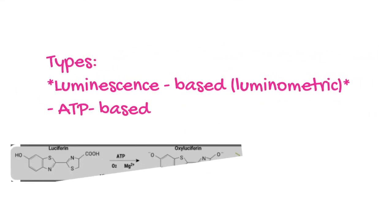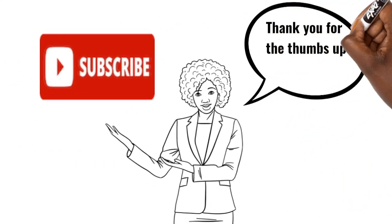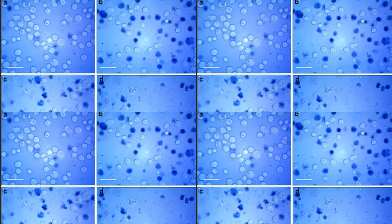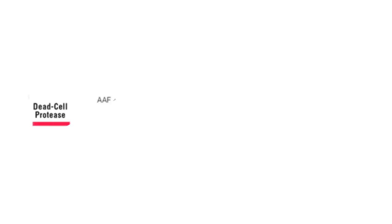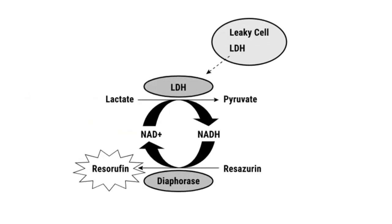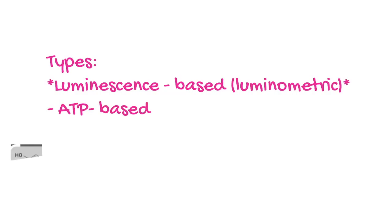Finally, an assay that relies on a luminescent signal has the greatest sensitivity, and this involves ATP. ATP can be used to measure cell viability since only viable cells can synthesize ATP. ATP can be measured using a reagent called CellTiter-Glo, a luminescent cell viability assay. In summary, there are assays utilizing dye exclusion principles, assays utilizing dead cell proteases, those relying on the ability of metabolically active cells to reduce a substrate, and those relying on ATP release giving a luminescent signal.